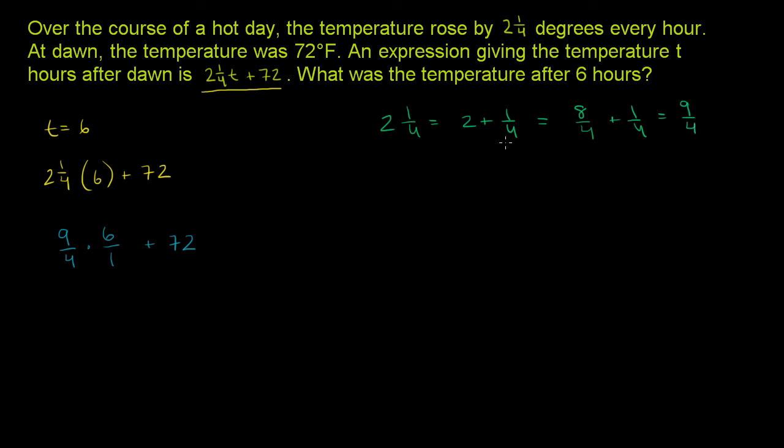A quick way to do it is you realize that 2 is going to become 8 over 4, and you can think about that just by multiplying it by 4. 2 times 4 is 8, and then you're going to add it to this 1 over here to get 9 over 4. Once you get some practice, you'll just kind of do that in your head.